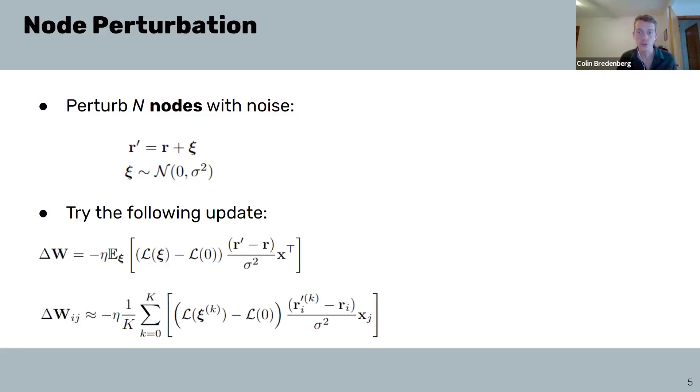Unlike weight perturbation, there are two locally available terms, changes in the firing rate of neuron RI and the presynaptic inputs of the neuron XJ. As a consequence, this type of plasticity is called a reward or loss modulated Hebbian plasticity rule, or alternatively a three-factor plasticity. This update is an estimate of the gradient for much the same reason as for weight perturbation.